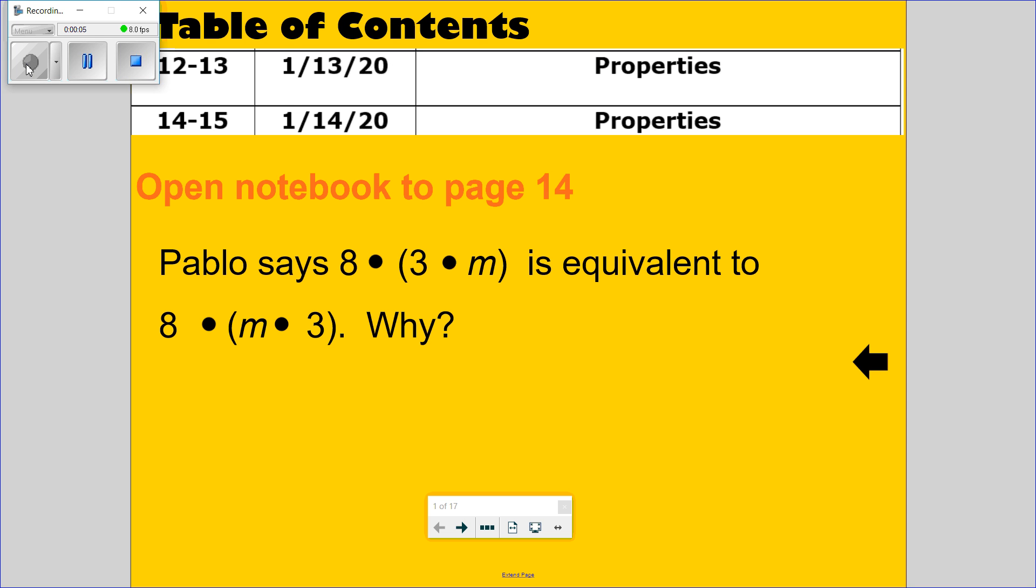Welcome. Again, this is over properties. So, Pablo says 8 times 3 groups times m is equivalent to, the same as, 8 times m times 3. Why or why not?